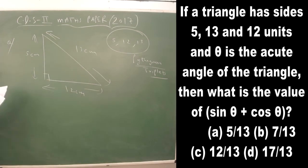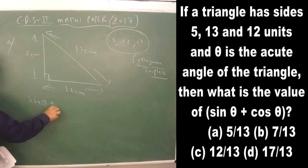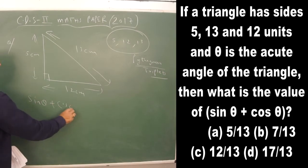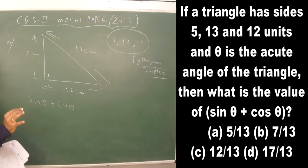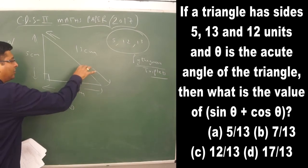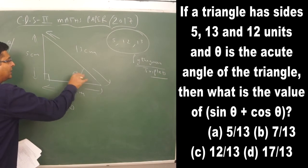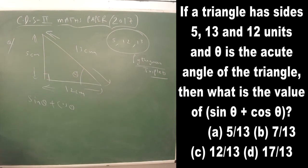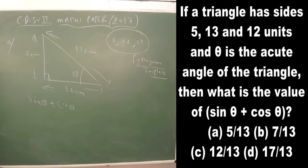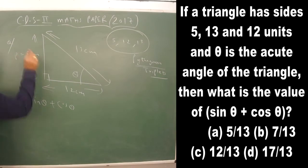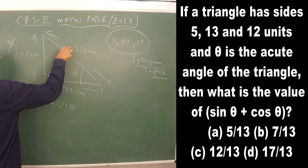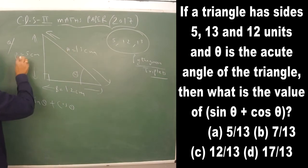After drawing the figure, the question asks you to calculate the value of sin θ + cos θ. You take one of the angles as θ, apart from the right angle. We label the sides as P (perpendicular), B (base), and H (hypotenuse).